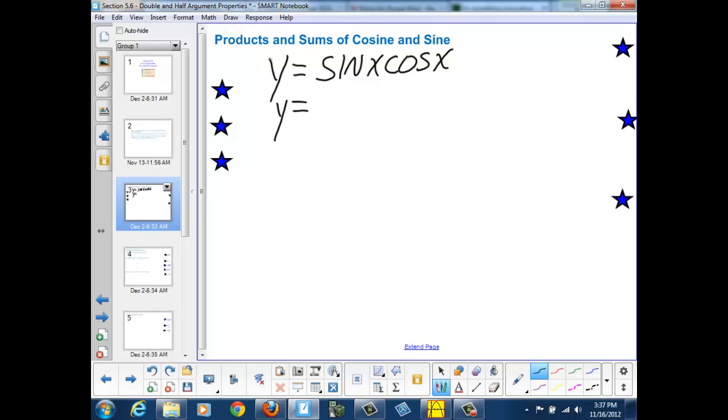And the square of each of those, cosine squared x and y equals sine squared x. Well, first let's explore their graphs and see what they look like.